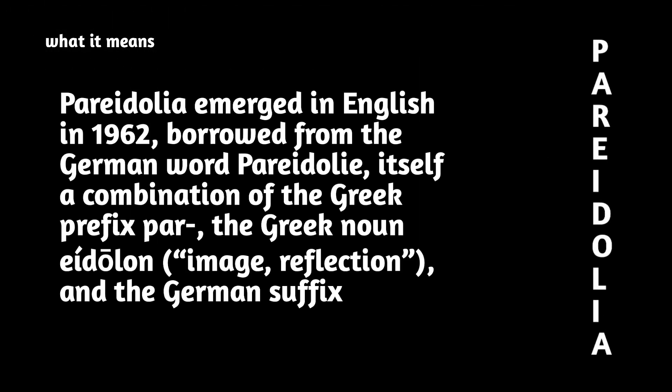Pareidolia emerged in English in 1962, borrowed from the German word Pareidolie, itself a combination of the Greek prefix para-, the Greek noun eidolon — meaning image or reflection — and the German suffix.